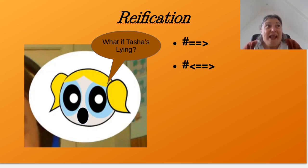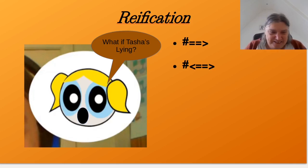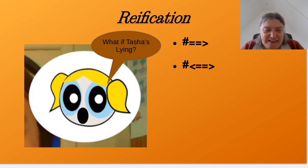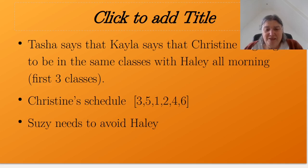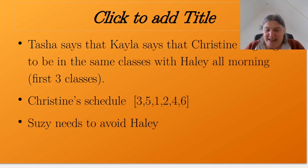Except she's been thinking — what if Tasha's lying? That Tasha's a devious one, and she might be lying. But she might be telling the truth. So go back, take your solution, and account for the fact that Tasha might be lying. If Tasha's lying, we know Christine's schedule, but that probably means she tried to get us into as many classes with Haley as possible.